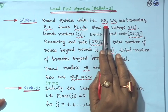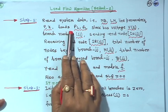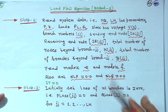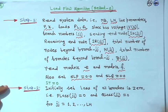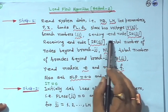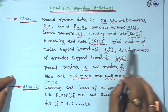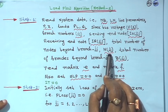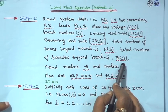First, you have to read the system data: N B is the total number of nodes, L N is the number of branches, then line parameters R and X, loads P L and Q L at every node, then slack bus voltage V1 — its magnitude. Angles are not required. Then branch number jj, sending end node isjj, receiving end node irjj — all in tabular form. Total number of nodes beyond branch jj is N jj, and total number of branches beyond branch jj is B jj — you have to read all this in the computer.